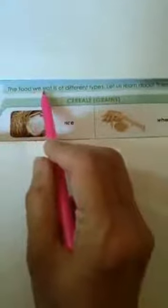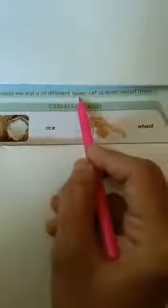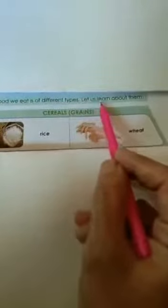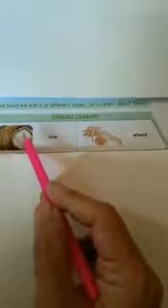Now we will learn about types of food. The food we eat is of different types. Let us learn about them. Grains - picture of rice, picture of wheat.